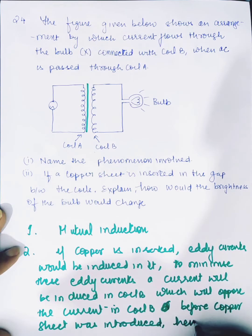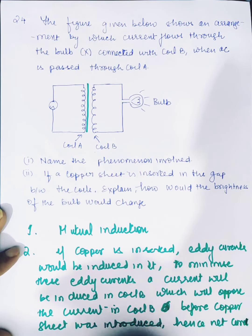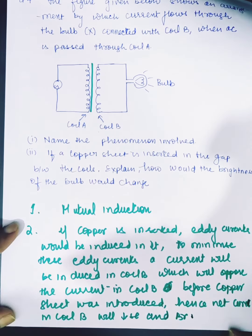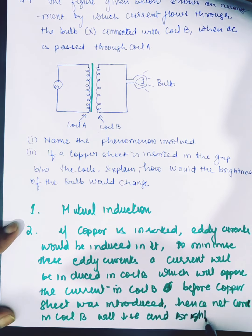Hence, net current in coil B will decrease and brightness will decrease.